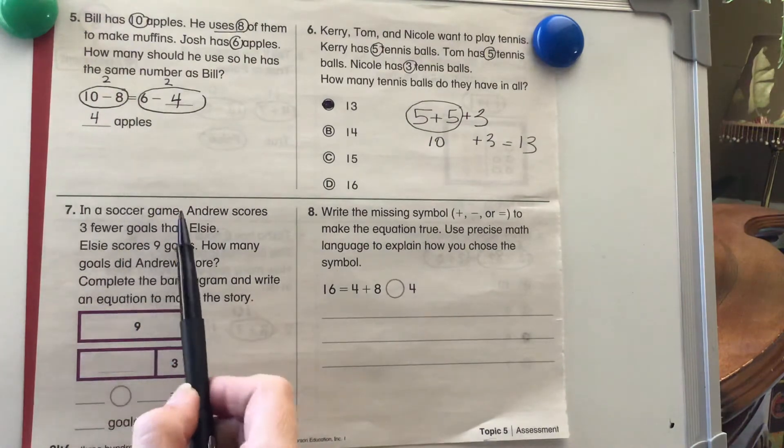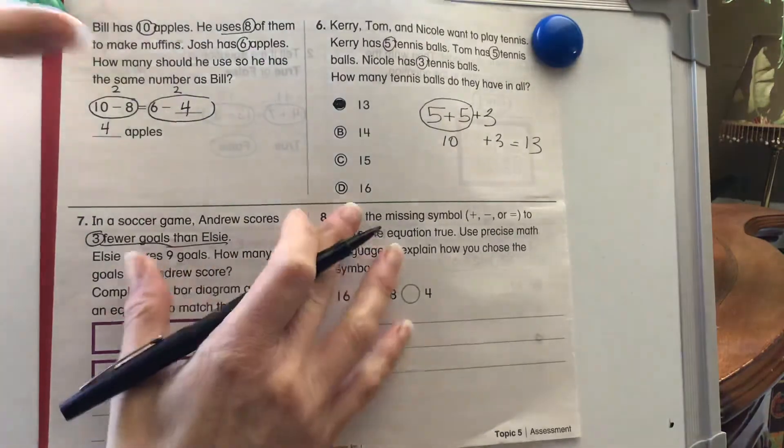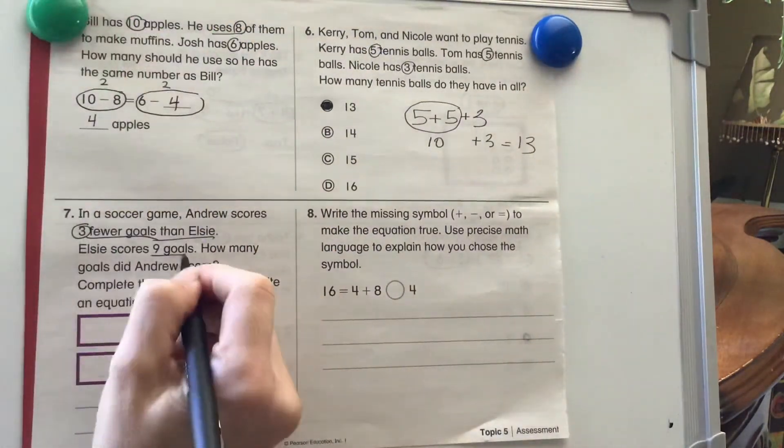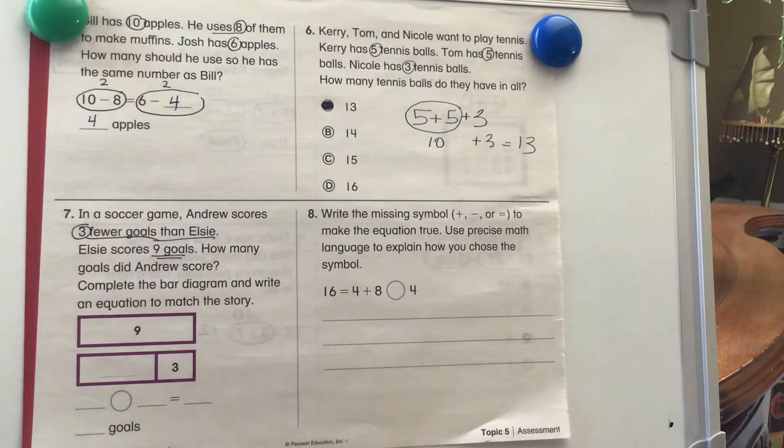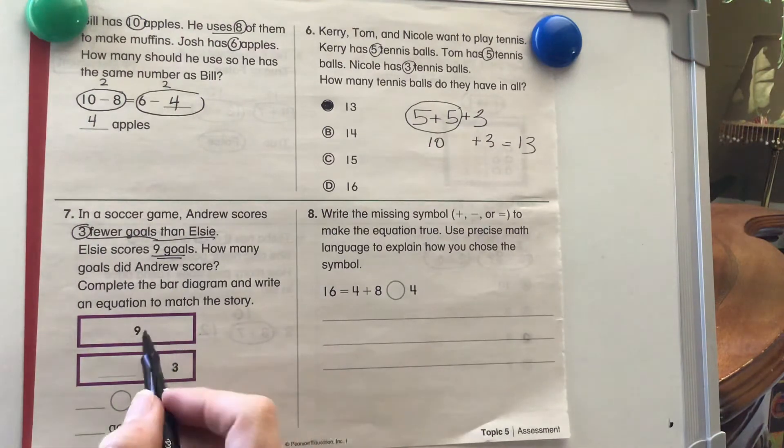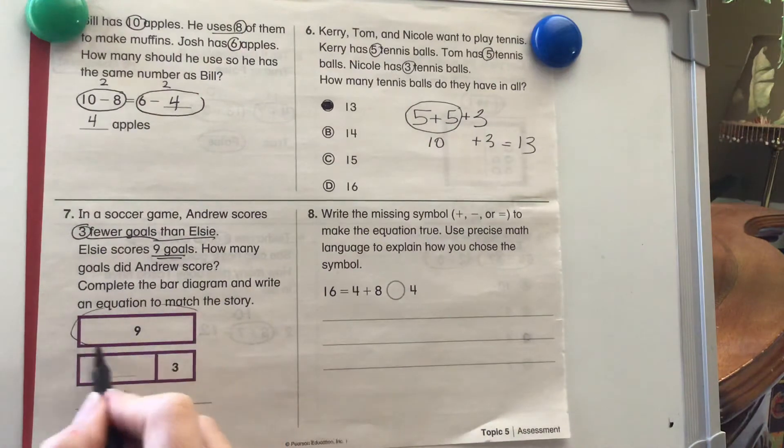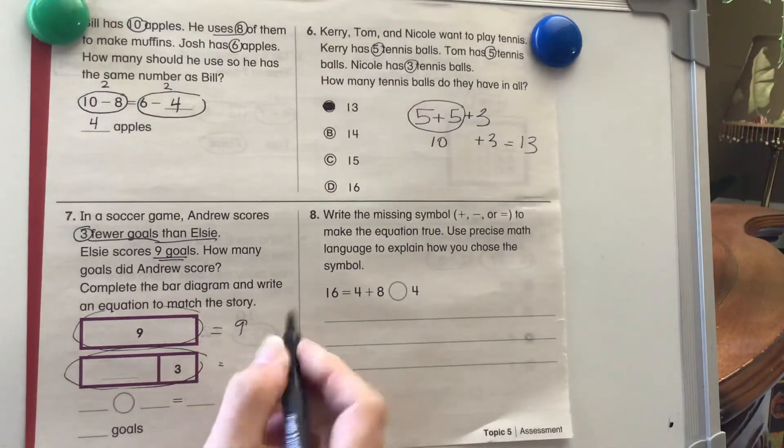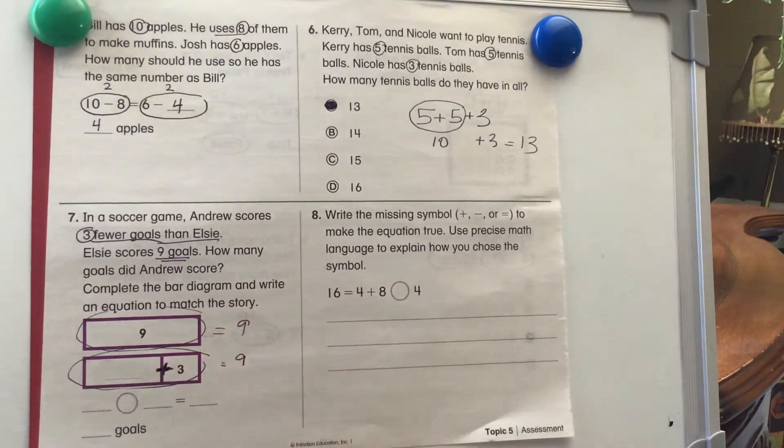Number 7. In a soccer game, Andrew scores 3 fewer goals than Elsie. Elsie scores 9 goals. How many goals did Andrew score? Complete the bar diagram and write an equation to match the story. We know that Elsie scores 9 and Andrew is 3 fewer. So we need this top bar equals 9. We need this bottom bar to also equal 9. Think of what two numbers we can add together. 3 plus what equals 9? Go ahead and pause the video.